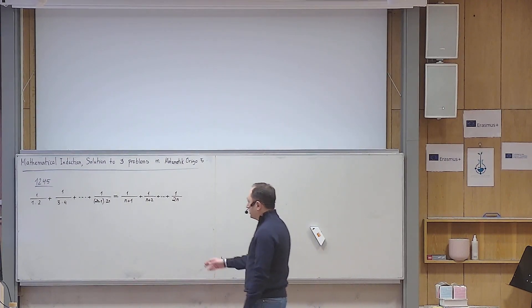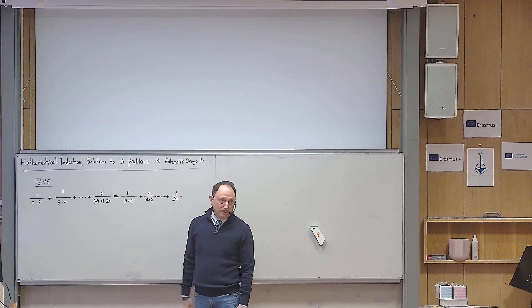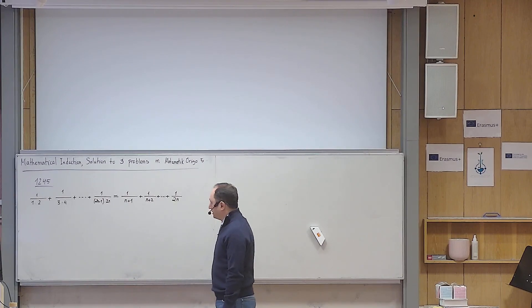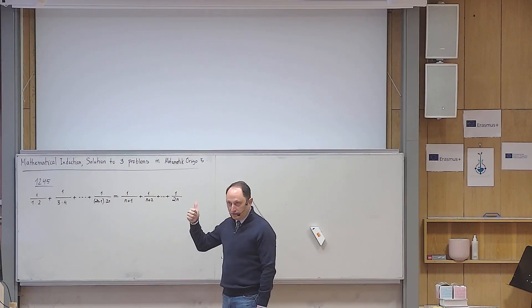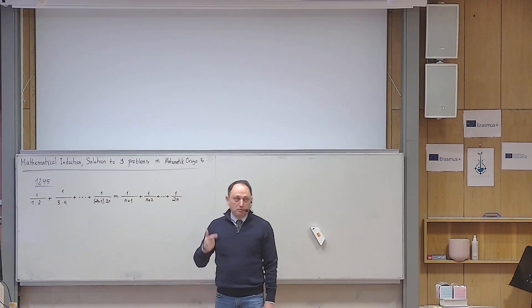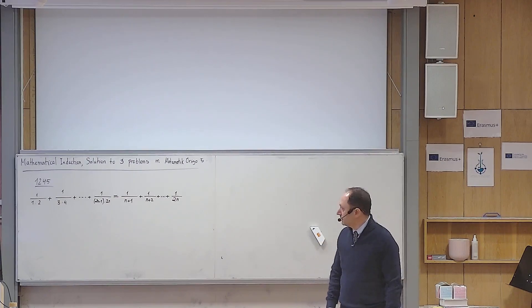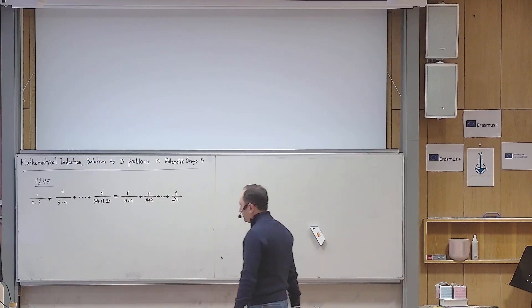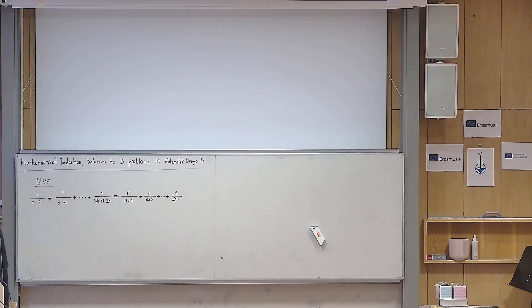The reason it is challenging is because the right-hand side starts with n — n is involved even in the first term on the right-hand side. If you can solve it, of course that's good, but at least I expect you to write P(1) correctly. P(k) is easy, you just replace n with k, but I want you to write the proper form of P(k+1). I really like this problem if you want to use mathematical induction to prove it.